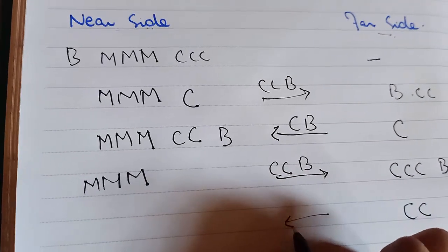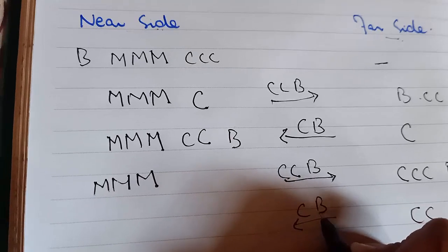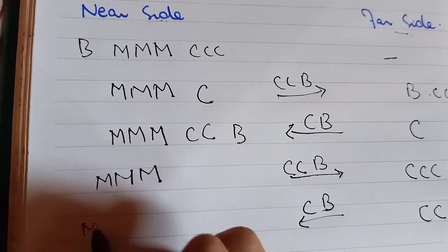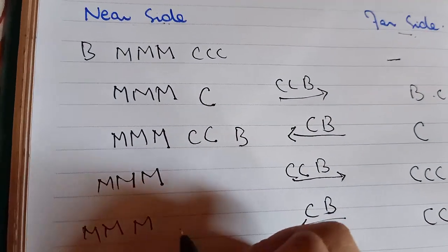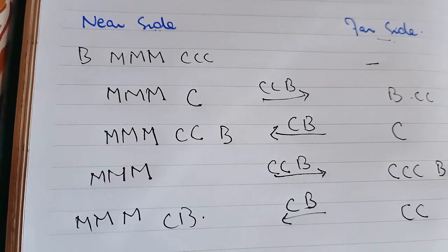Two cannibals, one cannibal, one boat — and here we have three missionaries, one cannibal, and one boat.